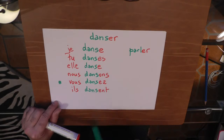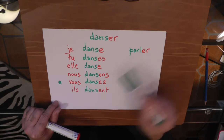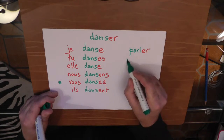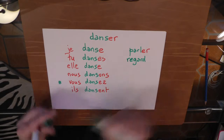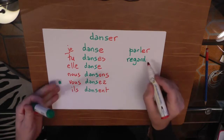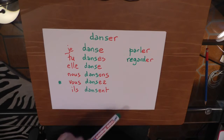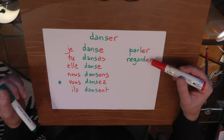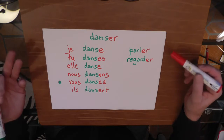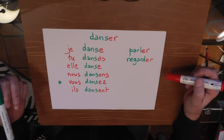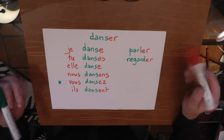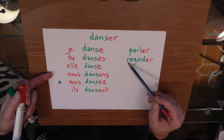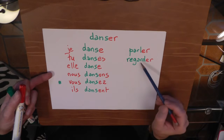Another one could be 'regarder,' which means to look or to watch, depending on context. For example, you say 'je regarde la télévision' — I watch TV, or I am watching TV. Or 'je te regarde' — I'm looking at you. But 'regarder' has an issue: this 'r' sound is difficult for some languages.